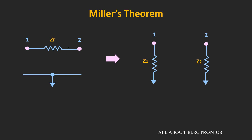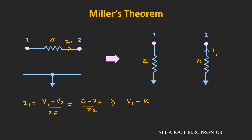Similarly, for node 2, current I1 is the incoming current, equal to V1−V2 divided by Zf. The same current should go into node 2, so it equals (0−V2) divided by Z2. From this, V1−K·V1 divided by Zf equals −K·V1 divided by Z2, giving Z2 = K/(K−1) × Zf. In this way, using Miller's theorem, we can convert any impedance between two nodes into two grounded impedances.